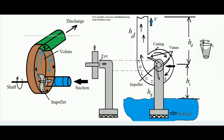This is the impeller and these are the vanes of the impeller — you can see these are the three vanes. When water enters inside the casing and the impeller is rotating, the water contained also starts rotating with the impeller vanes, because the impeller vanes are forcing the water to rotate. Due to this, centrifugal force is developed in the water contained.